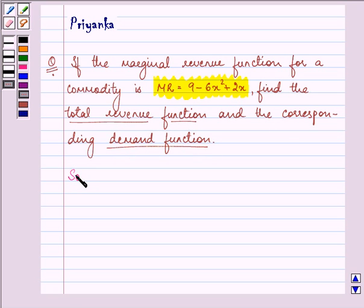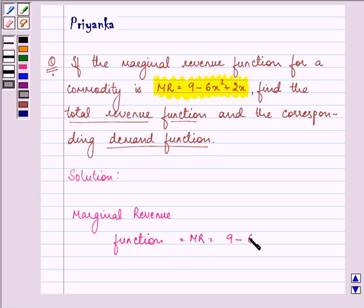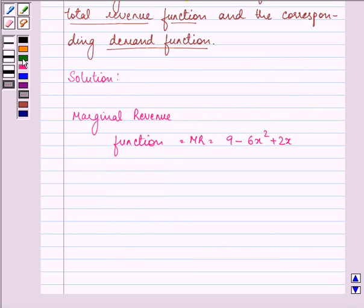Let's proceed with the solution. We have the marginal revenue function MR = 9 - 6x² + 2x. Now with the help of this marginal revenue function, we can easily find out the revenue function.